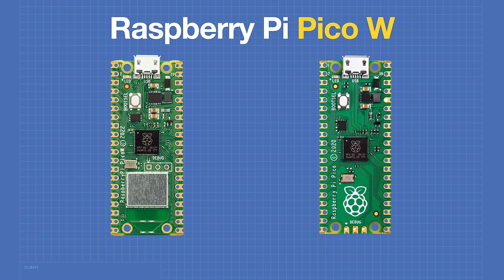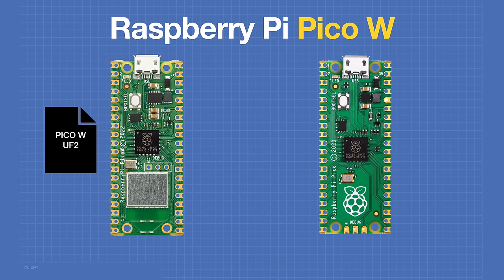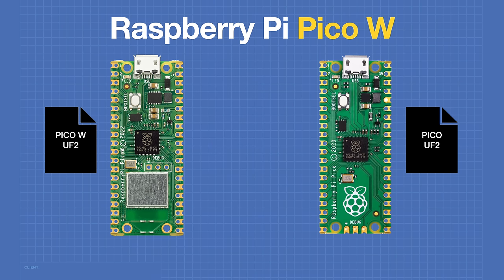The Pico-W has the same form factor and pinout as the original Pico, but there are a few subtle differences. The onboard LED is in the same location, but on the Pico-W it is driven by the Wi-Fi chip and uses port WL-GPIO1. On the original Pico, this used GPIO pin 25 on the RP2040 — pin 25 is now in use for the Wi-Fi. The debug connector pinout is identical, but on the Pico-W the debug has been moved from the edge of the board to further inward. For those programming in MicroPython, there is a new UF2 file for the Pico-W with all of the Wi-Fi libraries. Raspberry Pi is still maintaining a UF2 file for the original Pico, and you should use the correct file for your board.